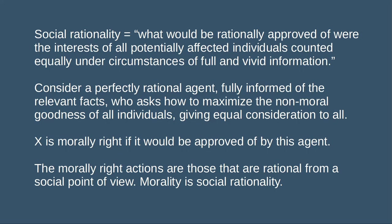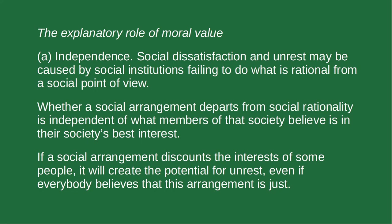For this to be naturalistically acceptable, we need to show that social rationality has an explanatory role that meets the conditions of independence and feedback. Recall the example of Verity drinking the milk — this is not in Verity's interest, and even if Verity believes that drinking milk is in her interests, she is subject to various negative consequences. We can explain Verity's distress by citing the fact that she failed to do what was in her objective interest. Along the same lines, Railton says we can explain social dissatisfaction and social unrest as being caused by societies failing to do what would be endorsed by a perfectly rational, fully informed agent who considers how to maximise non-moral goodness — by societies failing to do what is rational from a social point of view. Social arrangements that depart from social rationality have a significant potential for producing dissatisfaction and unrest.